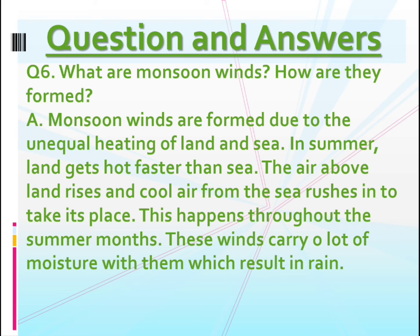In summer, land gets hot faster than the sea. The air above the land rises up and the cool air from the sea rushes to take its place. This happens throughout the summer months, and these winds carry a lot of moisture with them, which results in rain. Write this answer in your classwork and please learn it, children.